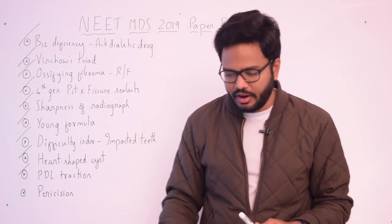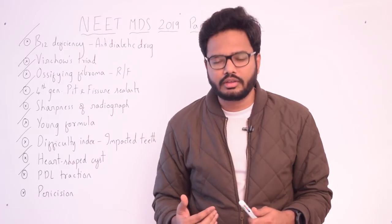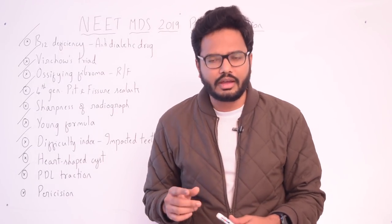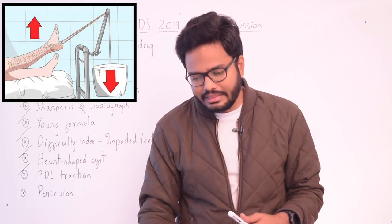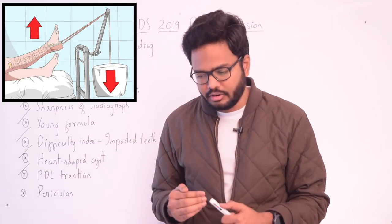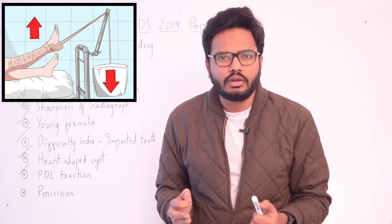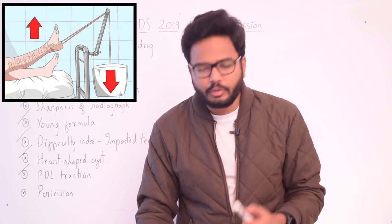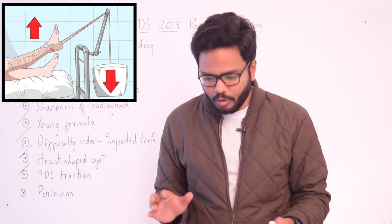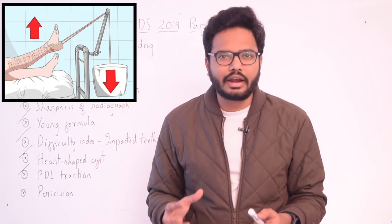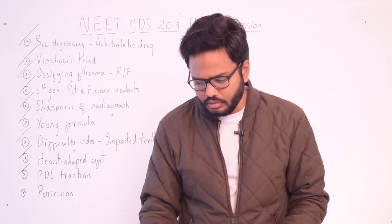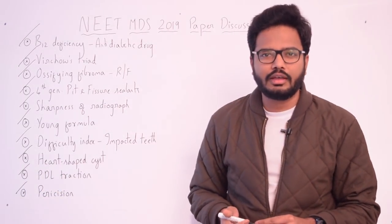Moving on to PDL traction — the ligament traction theory is assisted by fibroblasts. The periodontal ligament traction theory states that eruptive forces reside in the dental follicle and periodontal ligament complex. Formation and renewal of the PDL has been considered a factor in tooth eruption because of the traction power that fibroblasts have. However, this theory is not accepted because even impacted teeth with a well-developed PDL do not erupt. The bottom line is fibroblasts have this traction potential according to the periodontal ligament traction theory.